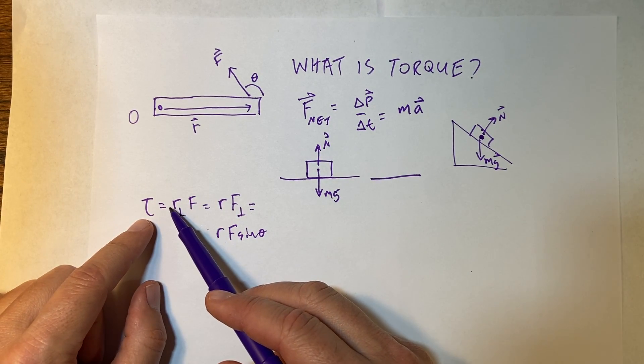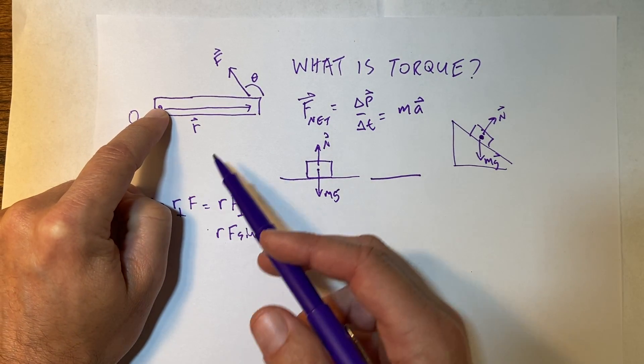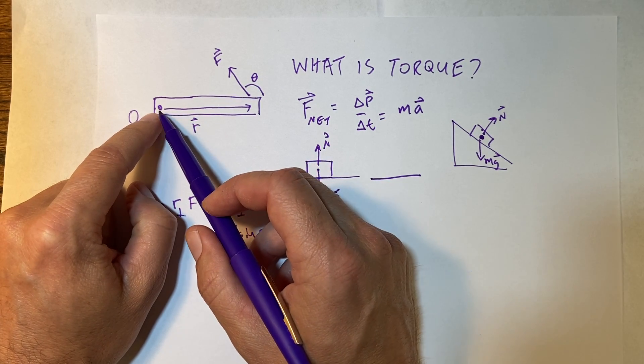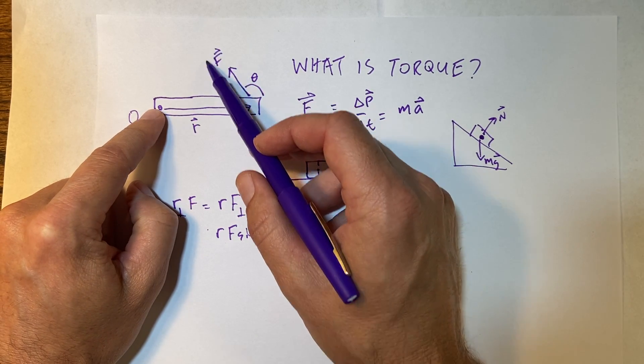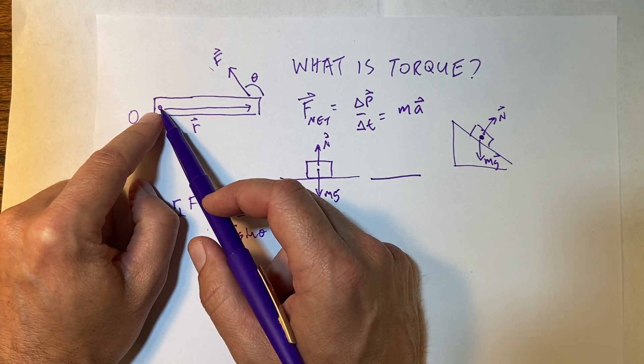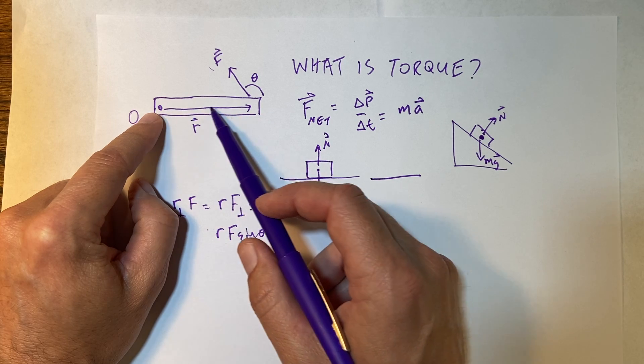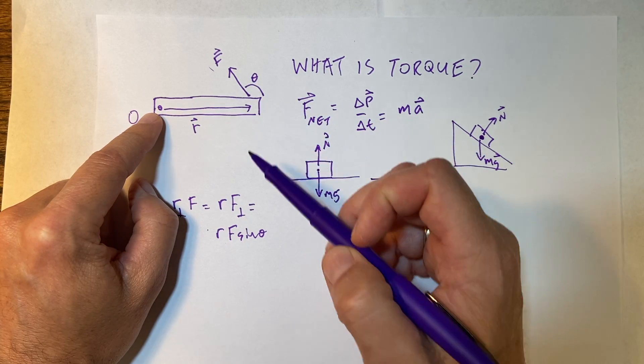So what this says is that the torque about this point due to this force depends on three things. It depends on the magnitude of that force. It depends on how far that force is applied from the point of rotation, and depends on the angle between those two.